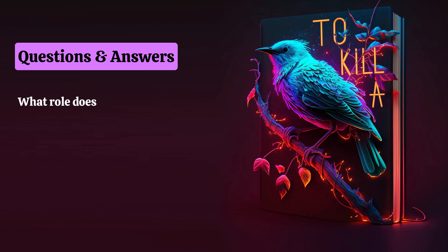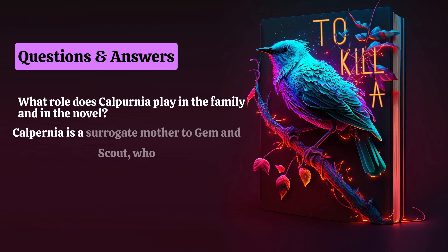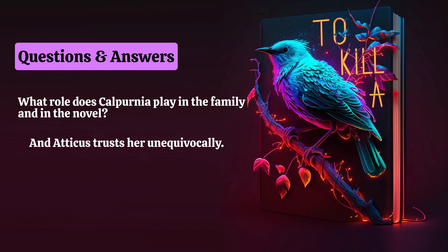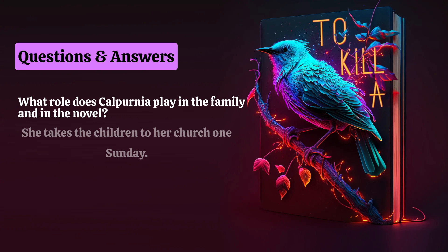What role does Calpurnia play in the family and in the novel? Calpurnia is a surrogate mother to Jem and Scout who teaches them about good manners, hard work, and honesty. She takes care of the family's needs, and Atticus trusts her unequivocally. She is also the narrator's window into Maycomb's African-American community. She takes the children to her church one Sunday, and because of this, Scout and Jem can sit in the colored balcony during Tom Robinson's trial.